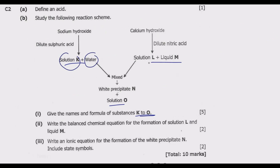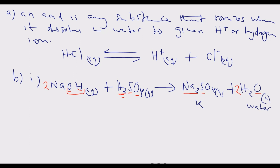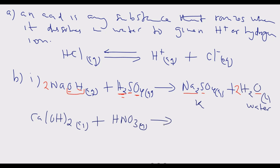Now for the second equation. Calcium hydroxide (Ca(OH)₂ aq) reacts with nitric acid (HNO₃ aq) to give a salt — calcium nitrate (Ca(NO₃)₂ aq) — plus water (H₂O liquid). Again, the hydroxide and the hydrogen from the acid combine to form water.